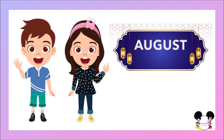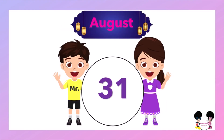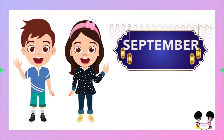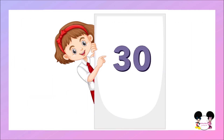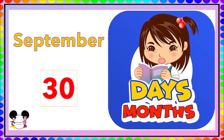August — how many days does August have? It's 31 days. August has 31 days. September — how many days does September have? 30 days. September has 30 days.